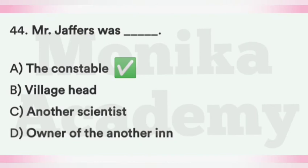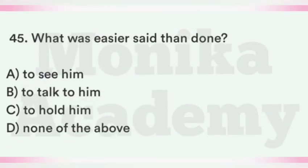Question 45: What was easier said than done? This refers to the incident when Griffin becomes invisible and villagers and Mr. Jeffers try to chase him. Option A: To see him. Option B: To talk to him. Option C: To hold him. Option D: None of the above. The correct answer is C, to hold him — पकड़ो पकड़ो कहना आसान था लेकिन invisible Griffin को पकड़ना बहुत मुश्किल था.